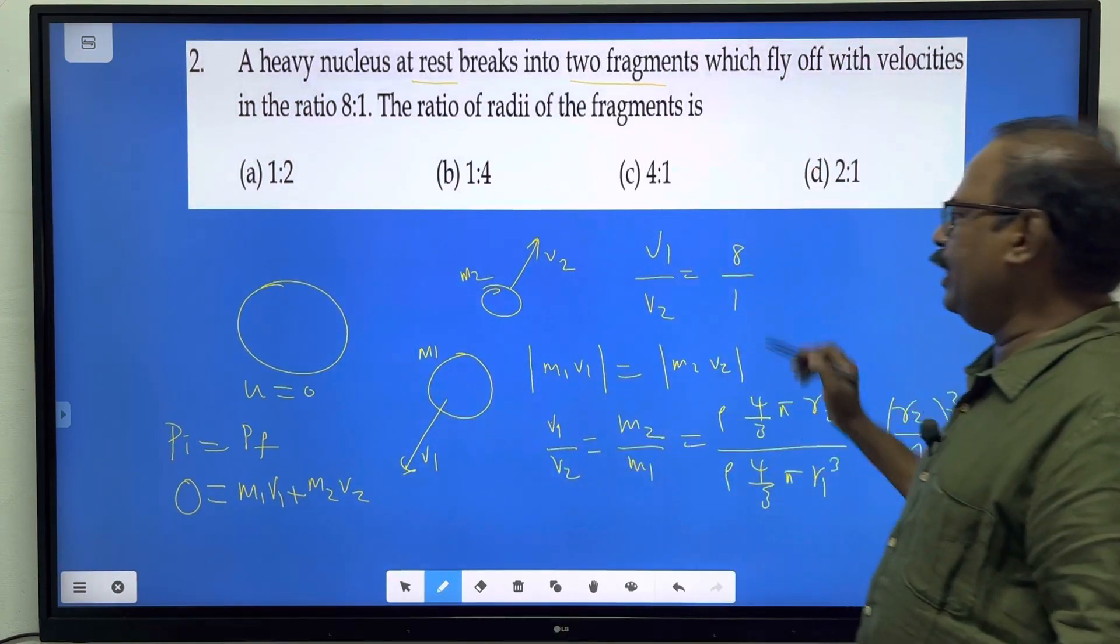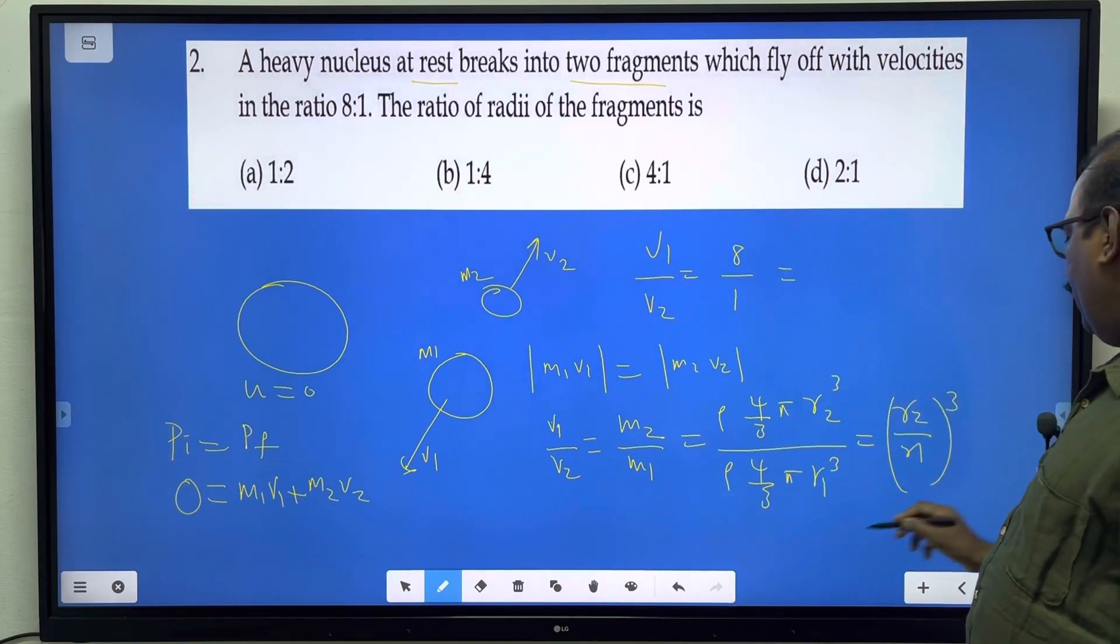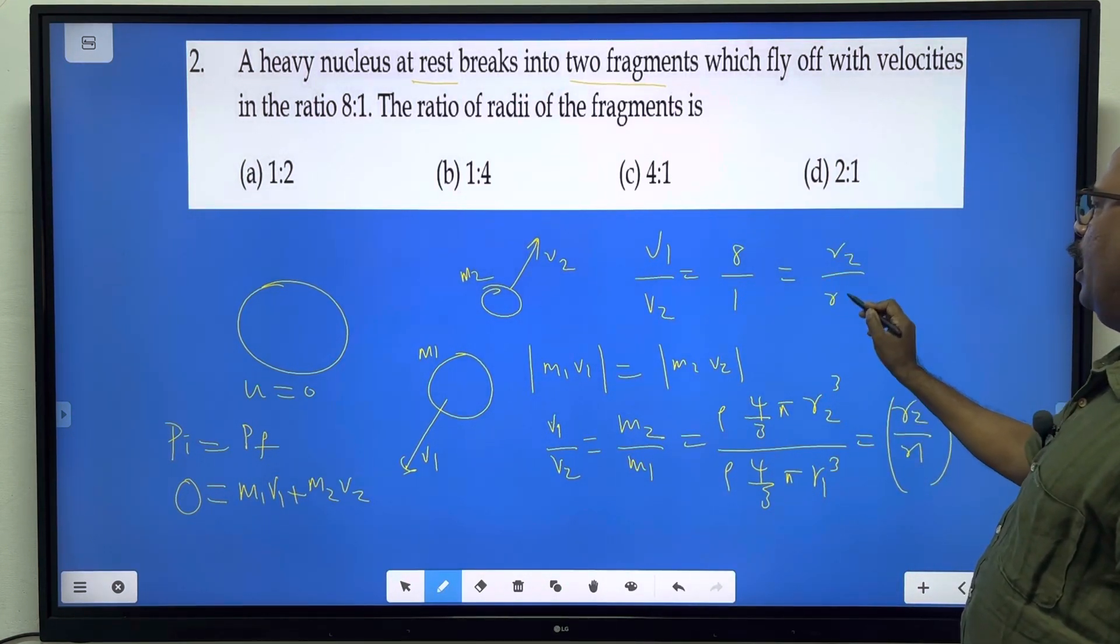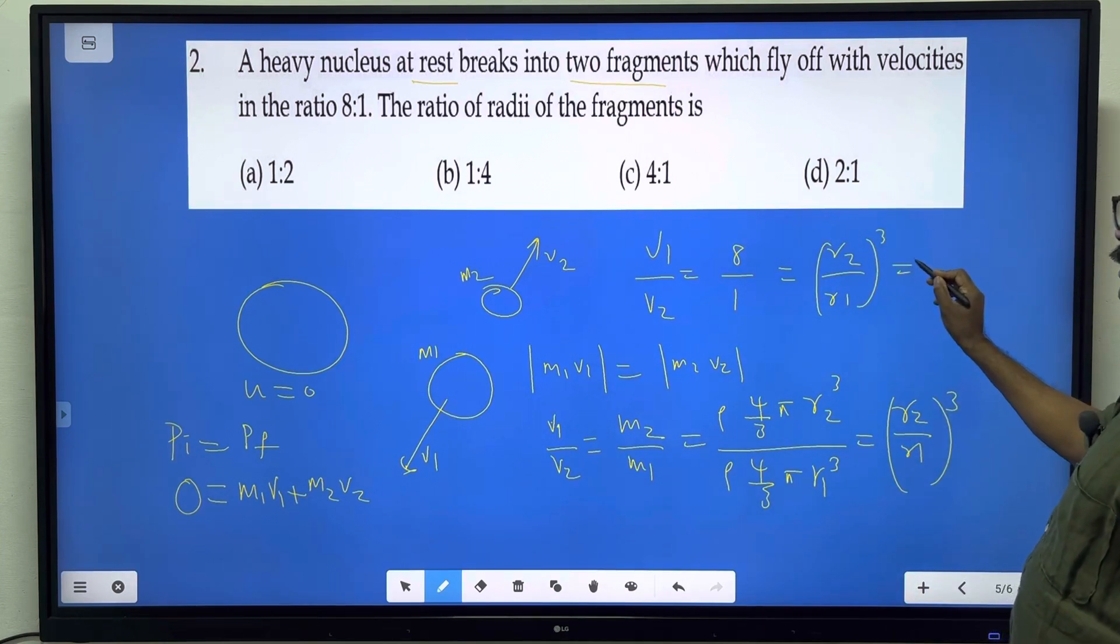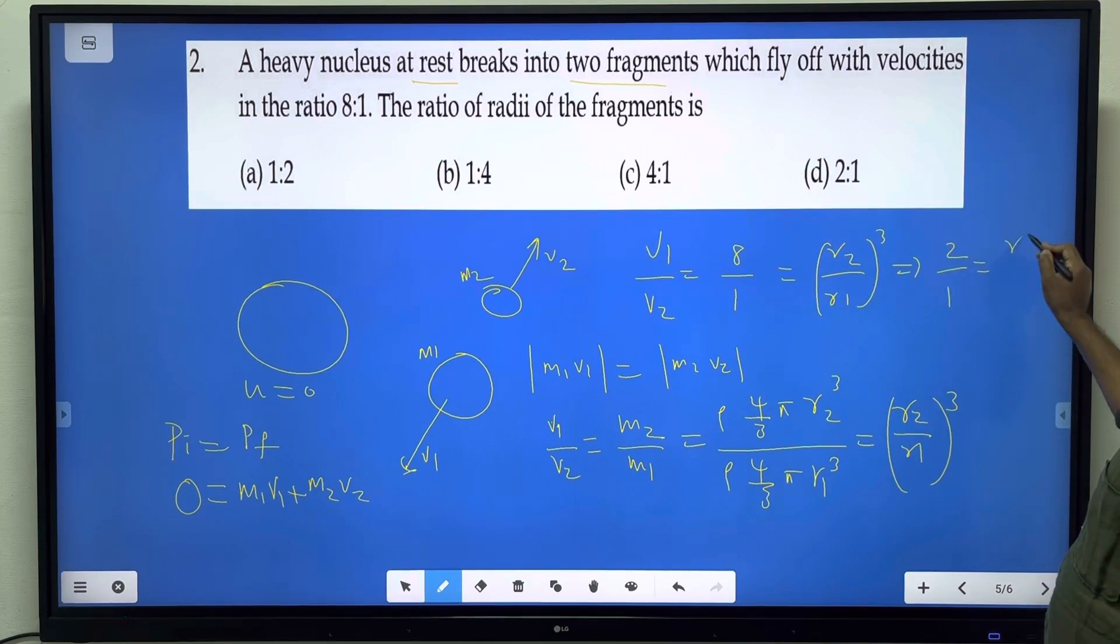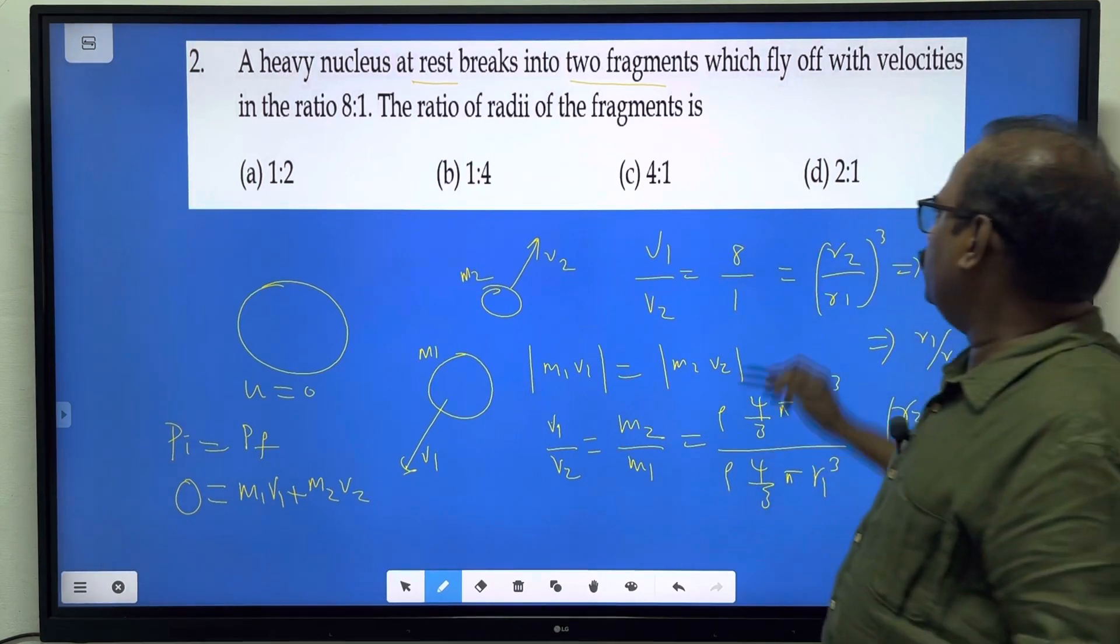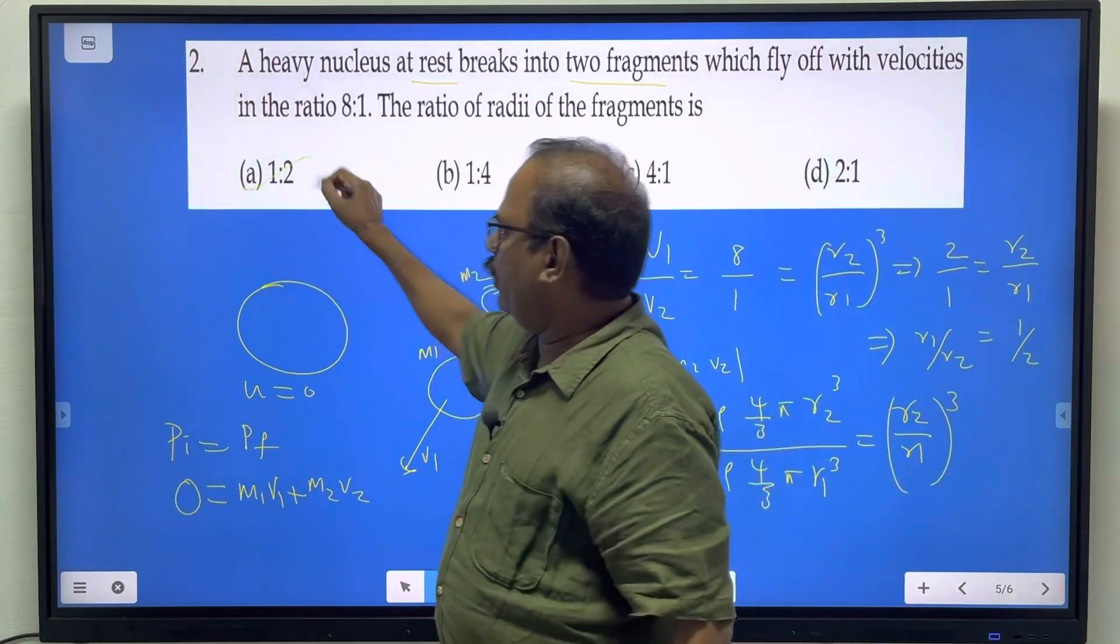So v1 by v2 equals 8 by 1, and that 8 by 1 equals r2 by r1 whole power 3. Taking the cube root: 2 by 1 equals r2 by r1. The question asks for r1 to r2, so r1 by r2 is 1 by 2. Therefore, the answer to this question is 1 to 2.